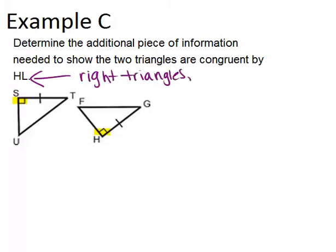You need to know that the hypotenuses are congruent, and you need to know that the legs are congruent. We know that they're right triangles, so that's good. We also know that HG is congruent to ST, and those are each legs, so we have a pair of legs that's congruent.